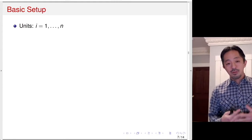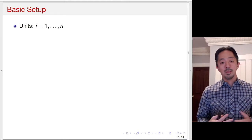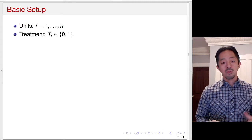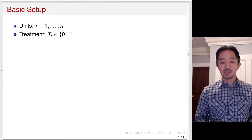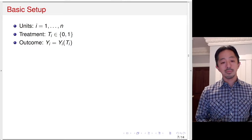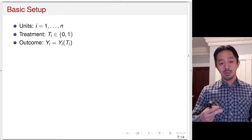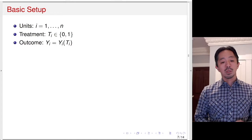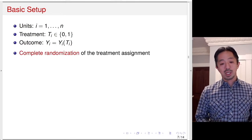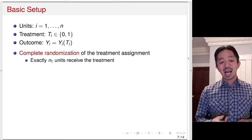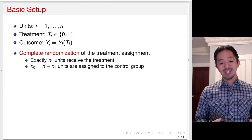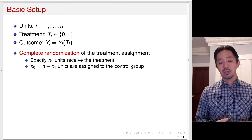Let's think about Fisher's Permutation Test in a more formal, general way. Suppose we have N units and a binary treatment Ti — 0 if control group, 1 if treated. The outcome is Yi, the potential outcome. The treatment assignment determines which potential outcome equals the observed outcome. Complete randomization means we assign exactly N1 units to the treatment group, and the remaining N0 (or N minus N1) units to the control group.